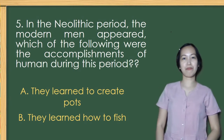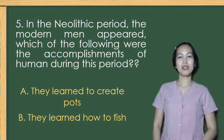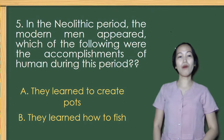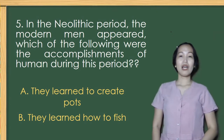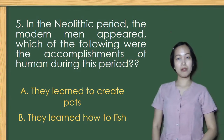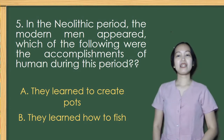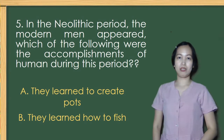Number 5. In the Neolithic period, modern men appeared. Which of the following were the accomplishments of humans during this period? A — they learned to create pots, or B — they learned how to fish? Letter A is the correct answer: they learned to create pots.